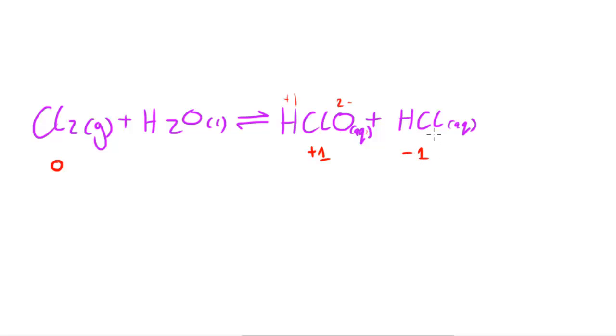From these two values, this shows us that chlorine has been oxidized and its oxidation number increased. It's also been reduced because its oxidation number has decreased in HCl. Therefore, I can tell that this is a disproportionation reaction.